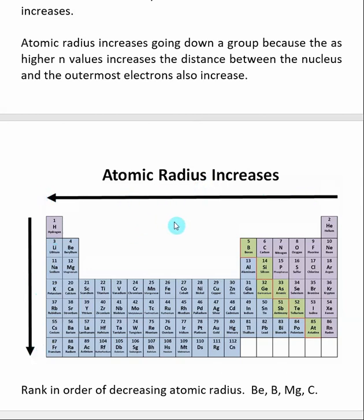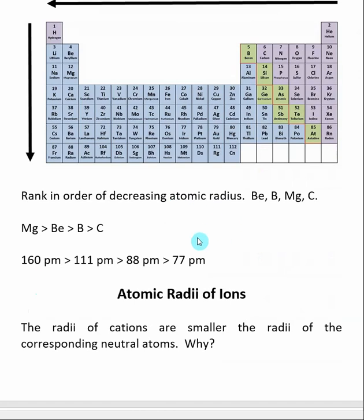You'll get questions like this: you have four elements — beryllium, boron, magnesium, and carbon — and you need to order them in decreasing radius. What you want to do is find which one is furthest to the left and down. Magnesium is furthest to the left and down, so we would expect that to be the largest. Then going to smaller radii, it would be beryllium, then boron, then carbon.